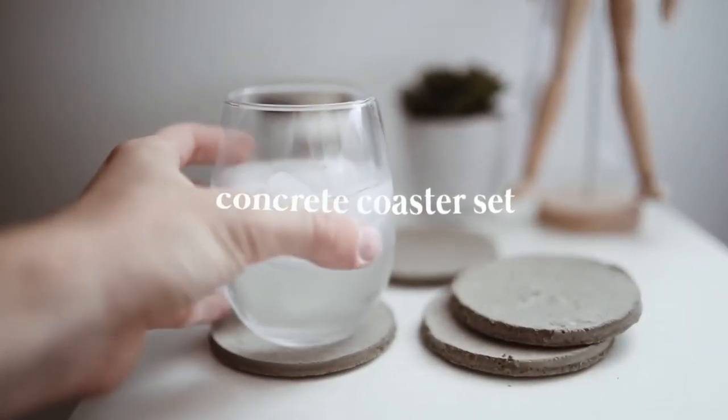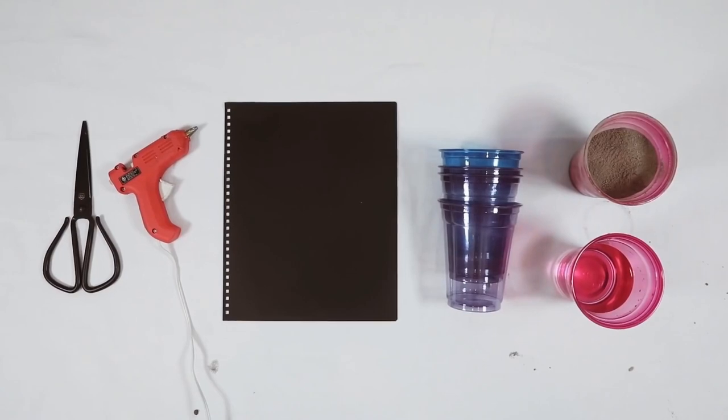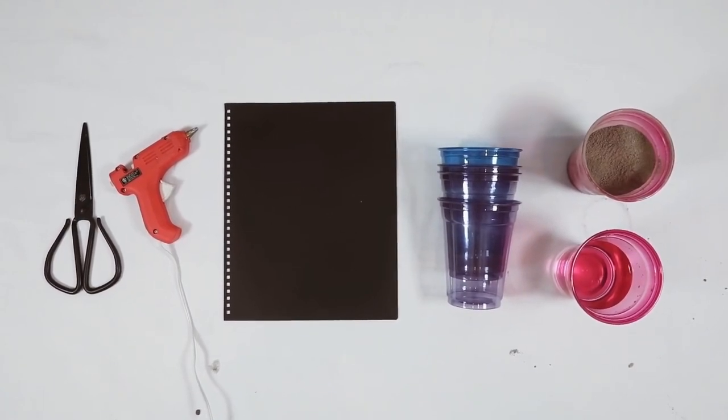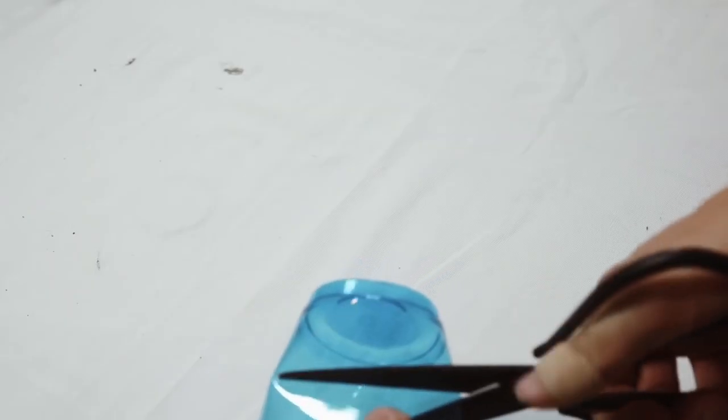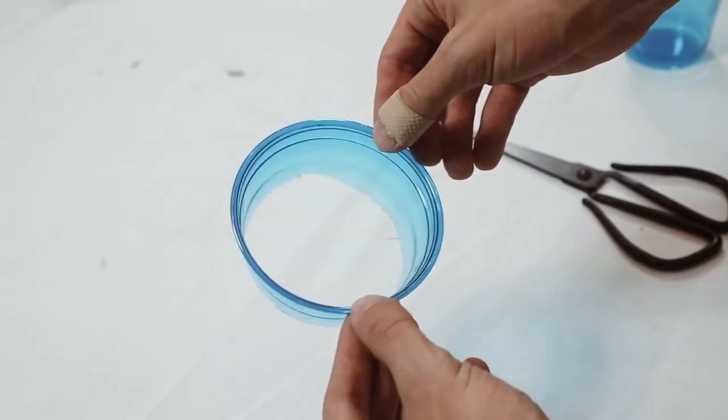Creating a concrete coaster set is actually extremely affordable and not as hard as it looks. All you're going to need is a couple of solo cups, some concrete mix, some water, and a hot glue gun.